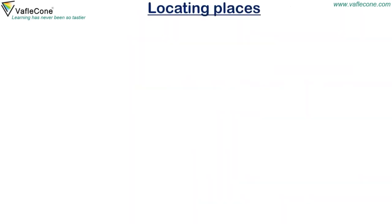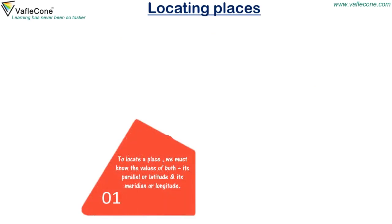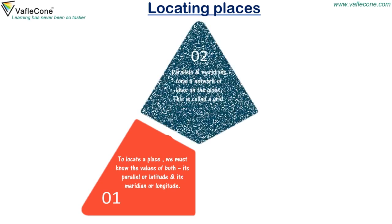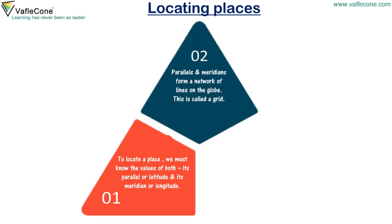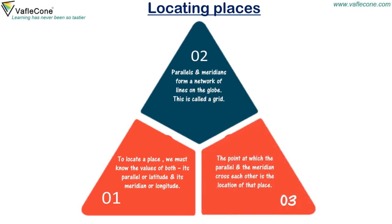Locating places. To locate a place, we must know the values of both its parallel or latitude and its meridian or longitude. Parallels and meridians form a network of lines on the globe called a grid. The point at which the parallel and the meridian cross each other is the location of that place.